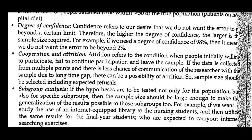The next factor is degree of confidence. Degree of confidence refers to our desire that we do not want errors to go beyond certain limits. For a higher degree of confidence, a larger sample size is required. For example, if we need a degree of confidence of 98%, that means we do not want the error to go beyond 2%. When determining and choosing sample size, errors and biases can occur, so our accuracy and confidence should be at least 98%.